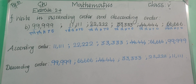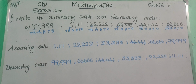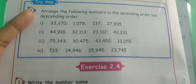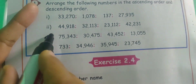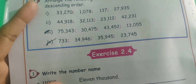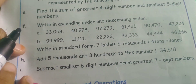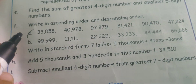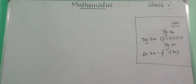That's all about today's class. For today's homework, from page number 36, try this — questions 3 and 4 are your homework. And in page number 37, in exercise 2.4, FA is your homework. Do your homework properly. Thank you.